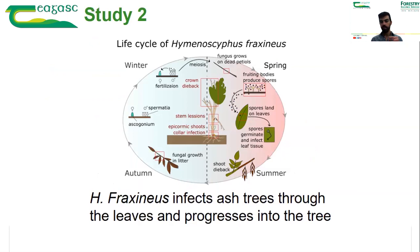When spores hit the right spot, they germinate and start a small infection in the leaves, which progressively becomes larger and advances into the tree. Once the fungus has reached the bark or stem, it starts causing what we call dieback, which is the major symptom of the disease.